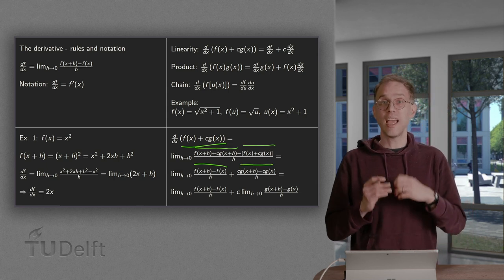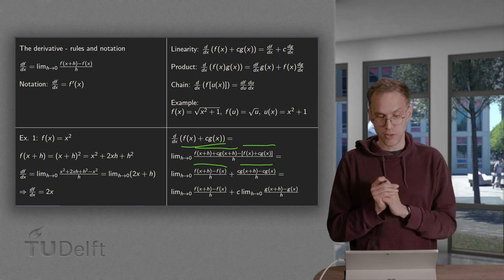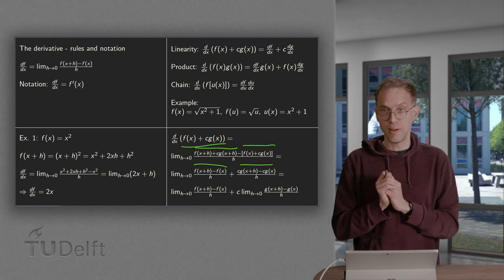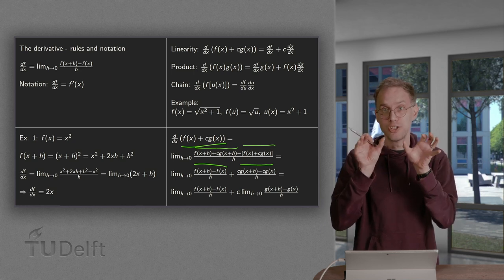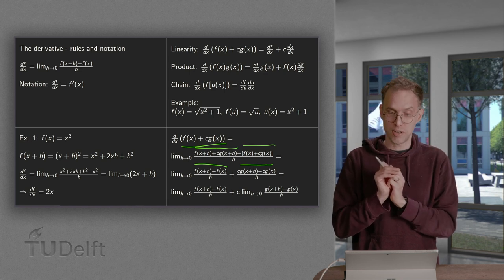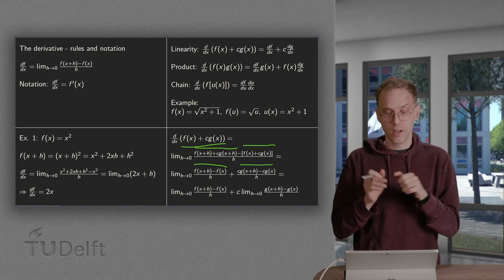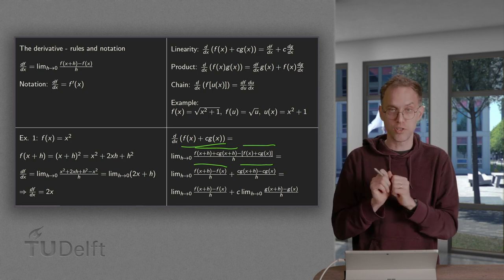And then if both limits exist, so here we use the limit rules. If both limits exist, then the sum of a limit is a limit of the... The sum of the limits equals the limit of the sum. So we can separate them.